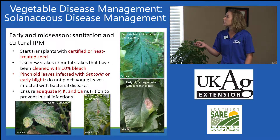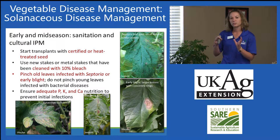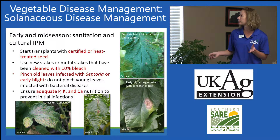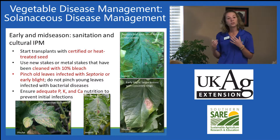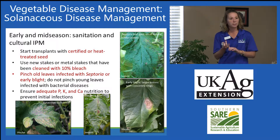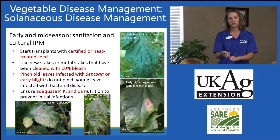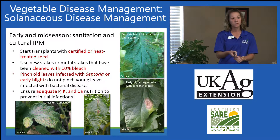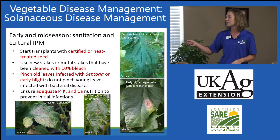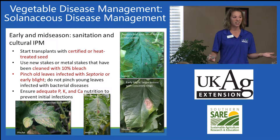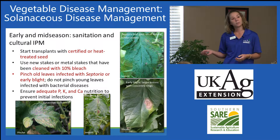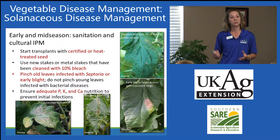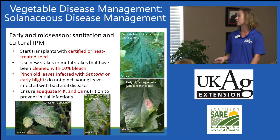In early and mid-season, the focus starts to shift to sanitation and cultural IPM. Start with clean planting material and also clean trellis material. I don't recommend reusing or sanitizing wooden stakes, but for metal stakes, cleaning methods are very effective — just a simple 10% bleach solution with visibly clean metal stakes. That can help eliminate some of the bacterial pathogens that can persist from year to year on those materials.